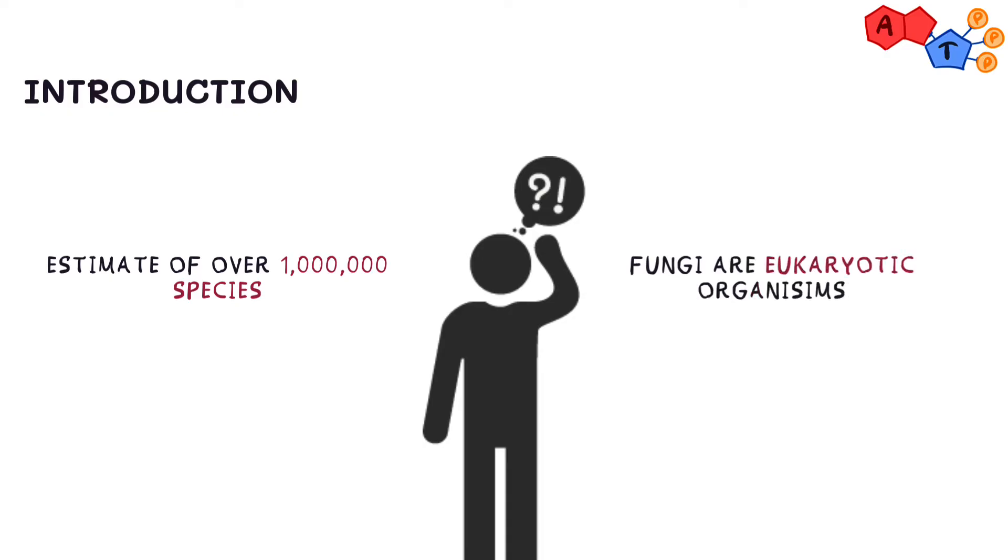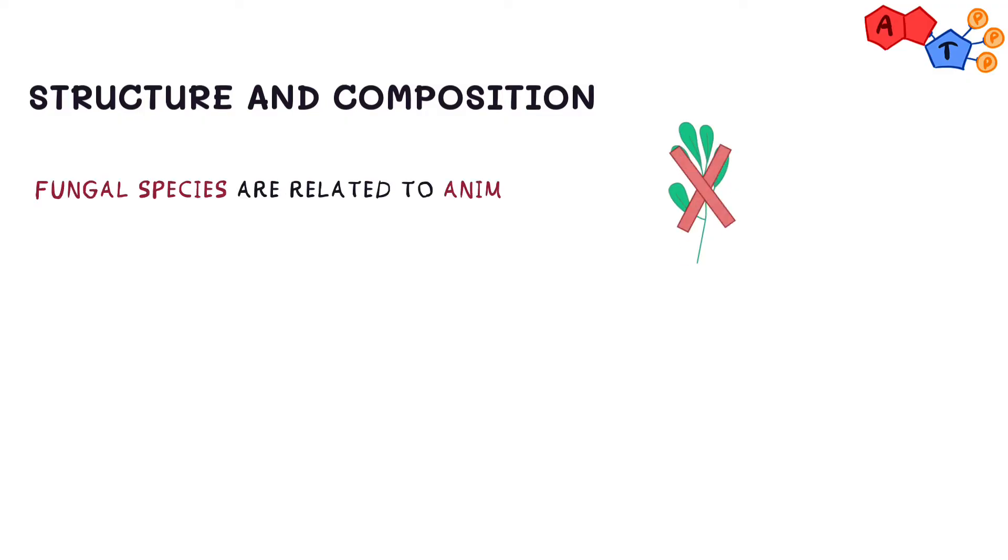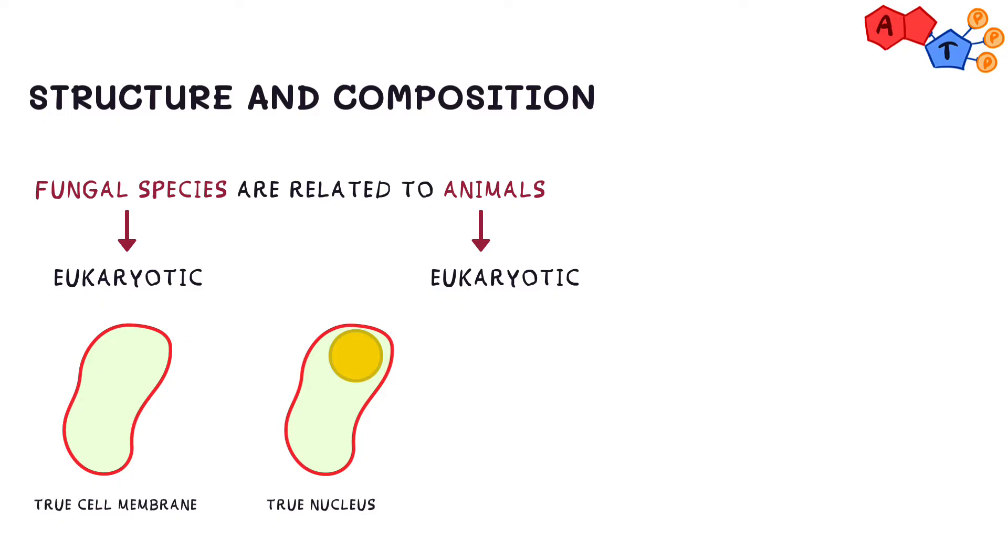were the first eukaryotes to invade the earth and are the focus of today's video. While many confuse fungal species for plants, they're more closely related to animals. For instance, both are eukaryotic, meaning that they contain membrane-bound organelles. They have a true cell membrane, a true nucleus, and true organelles.